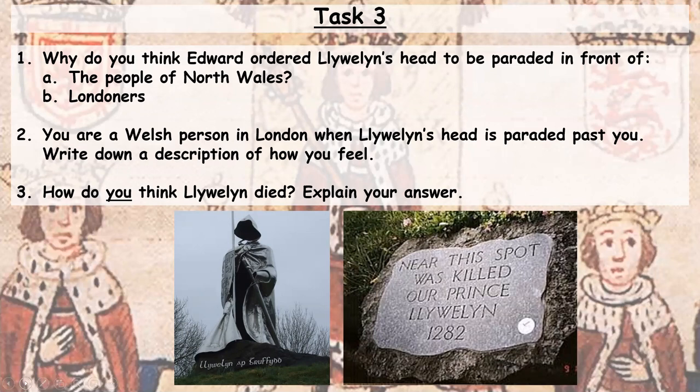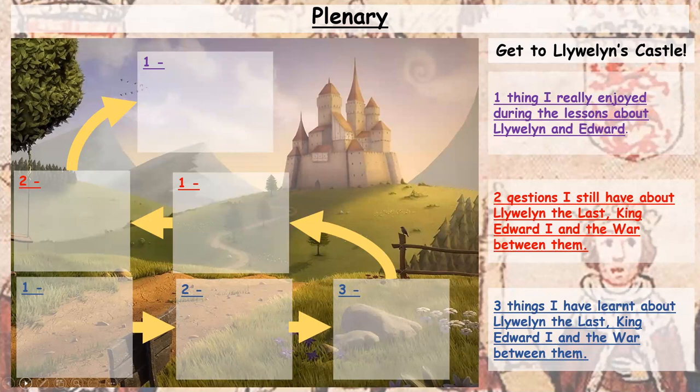We should be back now from completing task three, so here is the final task. I want you to get to Llewellyn's castle in Snowdonia. In order to get to his castle, you need to go through these steps. In the bottom row, write three things you have learnt about Llewellyn the Last, King Edward the First, and the war between them. In the next row up, write two questions you still have about Llewellyn the Last, King Edward the First, or the war. And finally, in the top row — when you reach the castle — write one thing you've really enjoyed during these lessons about Llewellyn and Edward.